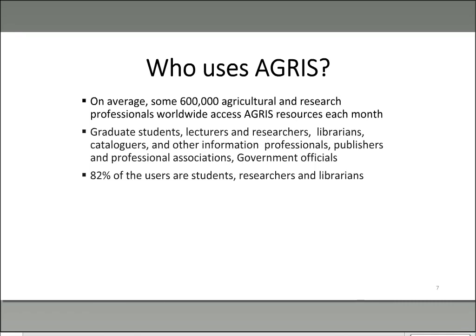On average, about 600,000 agriculture and research professionals worldwide access AGRIS resources each month. These users include graduate students, lecturers, researchers, librarians, cataloguers, and other information professionals. 82% of the users are students, researchers, and librarians, making up the majority of users.